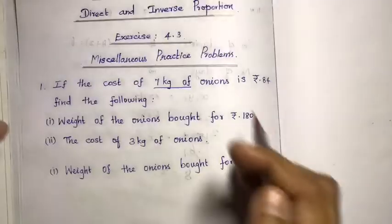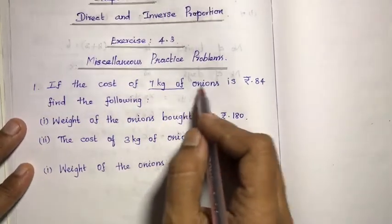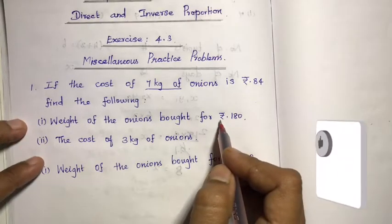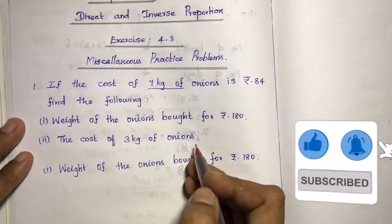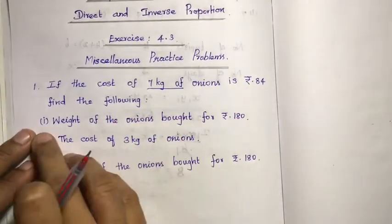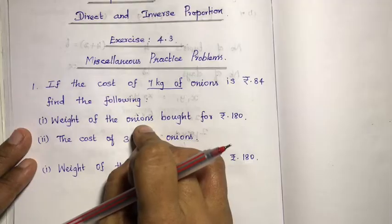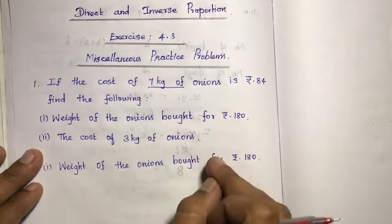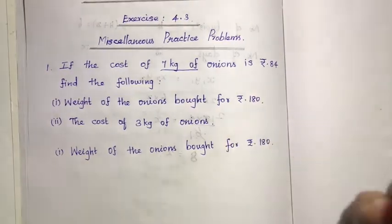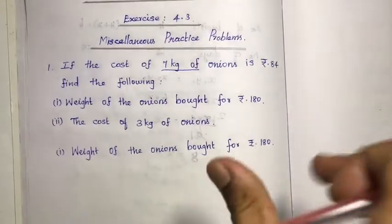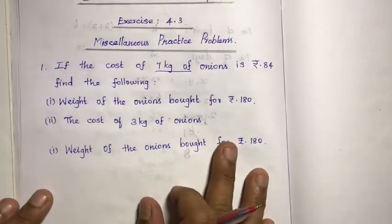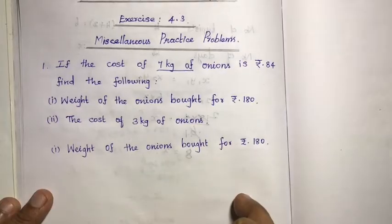First, Miscellaneous Practice Problems, First question. If the cost of 7kg of onions is 84 rupees, find the following: first, the weight of the onions bought for 180 rupees; second, the cost of 3kg of onions. We will use the Unitary Method. This method involves Direct and Inverse Proportion — we'll use the Unitary Method formula for an easy solution.